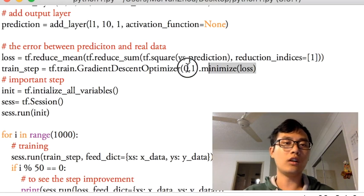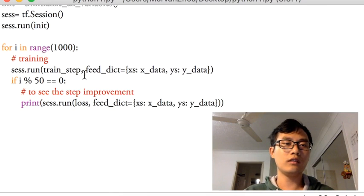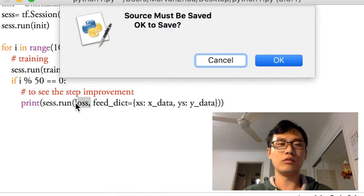And then we optimize the loss or cost between the real data and prediction. Then we run this train_step and feed the train_step with xs and ys, and we print the loss for every 50 steps. So we just run this.